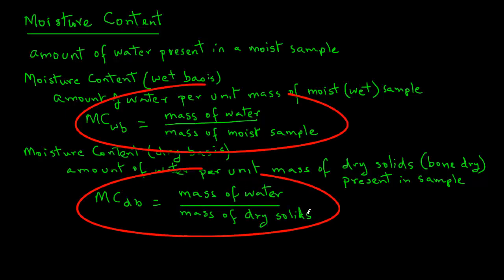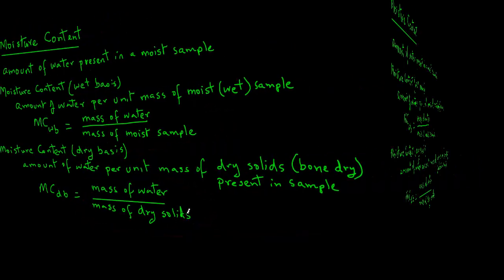Looking at these two equations, note that the numerator is the same, but the denominator is different. In case of wet basis, it is the mass of moist sample. In case of dry basis, it's the mass of dry solids that are present in that material.